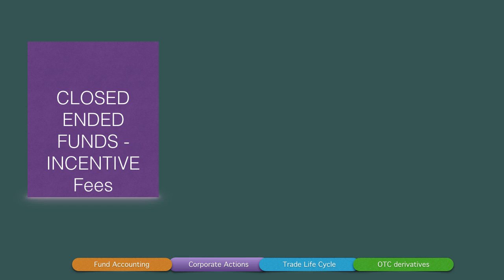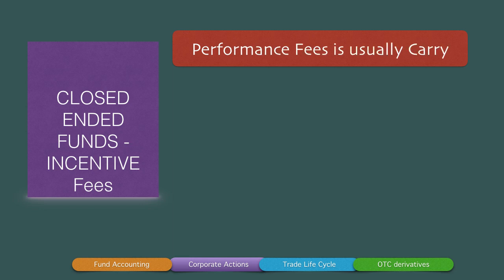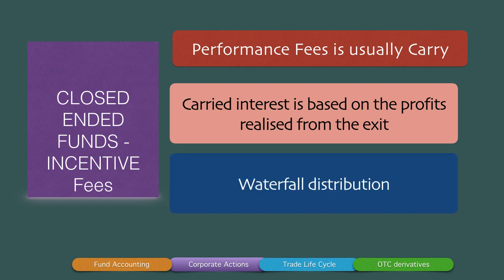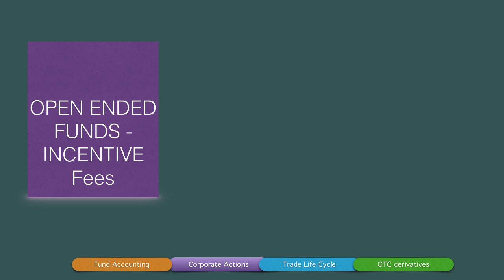Performance fees in a closed-ended fund is usually called carry or carried interest, and is based on the profits realized from the exit of the fund. When the fund winds up and partners start receiving their returns, the first payout is out of the capital contribution, the second is out of the preferred return, and then the returns are distributed by way of carried interest to both the general partner and the limited partner. This is called a waterfall distribution — a video on waterfall distribution has been uploaded and the link is shared in the comment section.